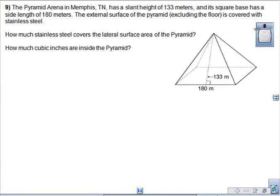On this next problem, you're given a pyramid arena in Memphis, Tennessee, has a slant height of 133 meters, a square base with side lengths of 180 meters, and the external surface of the pyramid, excluding the floor, is covered in stainless steel. So how much stainless steel covers the lateral surface area of the pyramid? How many cubic inches are inside the pyramid? So two questions in one here.